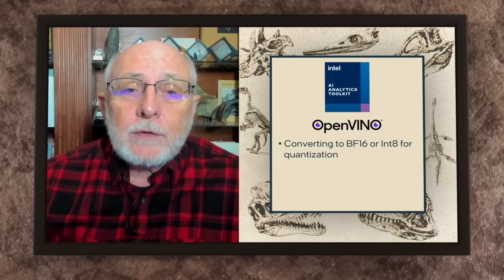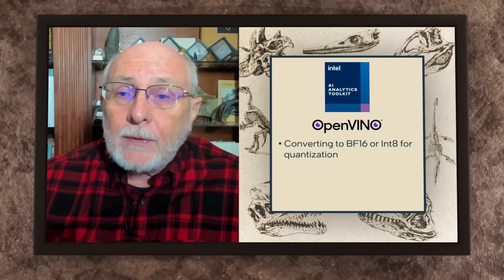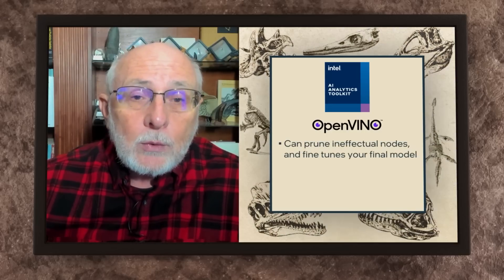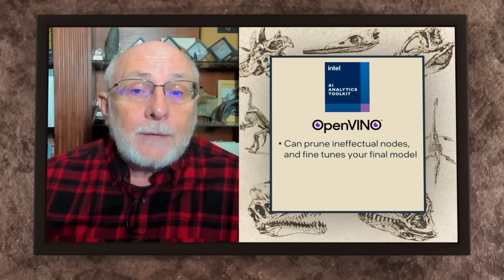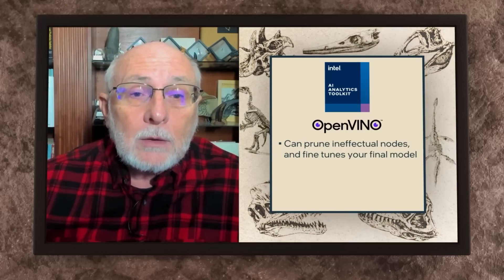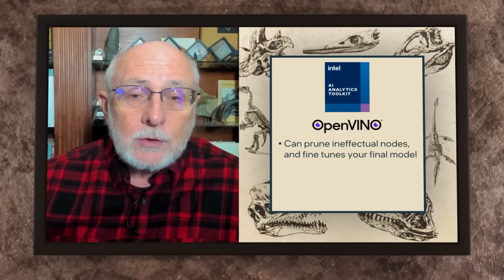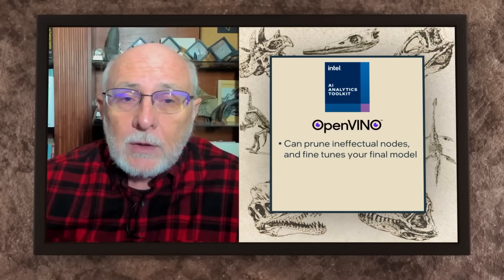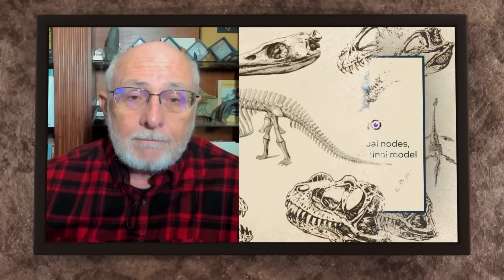OpenVINO looks for ways of streamlining the underlying graph that the deep neural network uses. It can prune out nodes that don't have much effect. It does a lot of fine-tuning to make your final model run incredibly fast on whatever architecture — CPU, GPU, VPU, etc. — and it does that with just the command line.